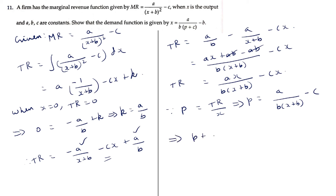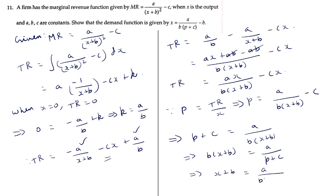Simplifying to express x in terms of p: p + c = a/(b(x+b)), so b(x+b) = a/(p+c), giving x+b = a/(b(p+c)). Therefore x = a/(b(p+c)) - b, which is what we had to prove.